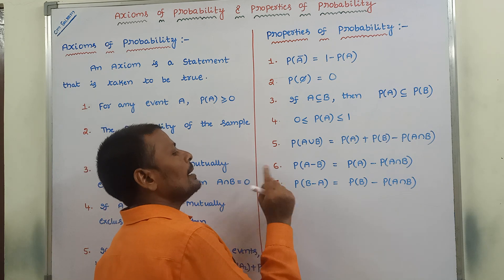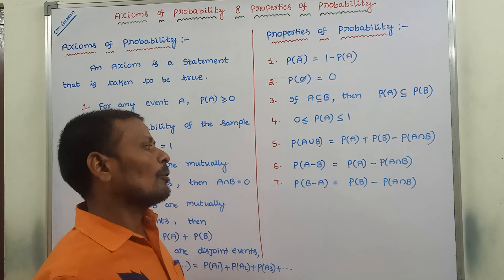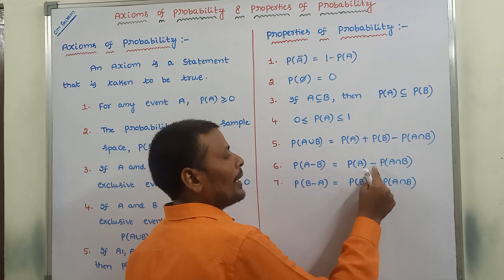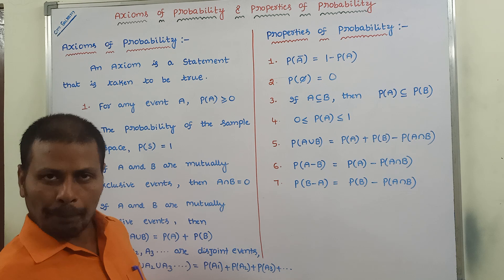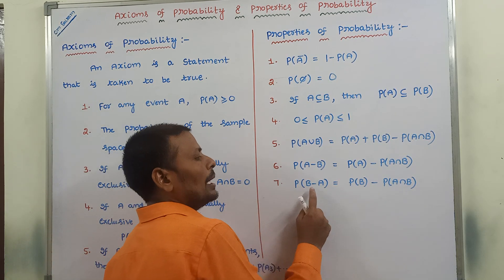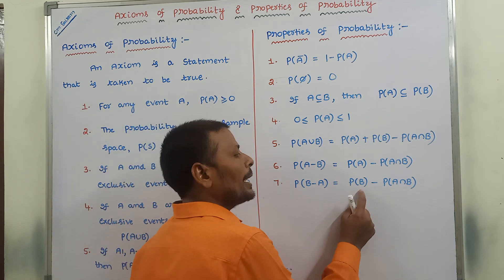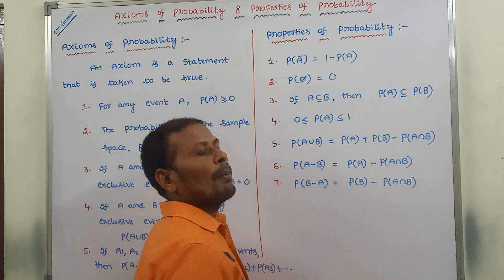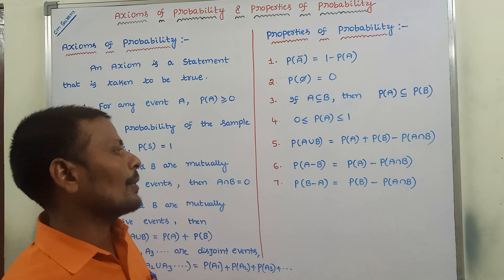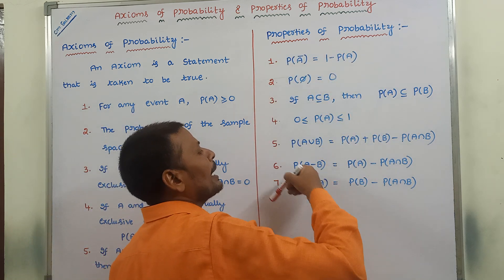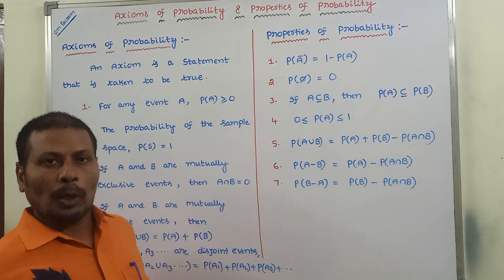Sixth point: probability of A minus B is equal to probability of A minus probability of A intersection B. Seventh point: probability of B minus A is equal to probability of B minus probability of A intersection B. So these seven can be called properties of probability, and these five can be called axioms of probability.